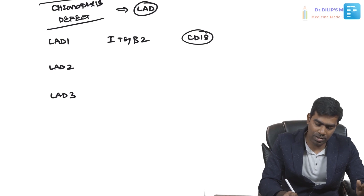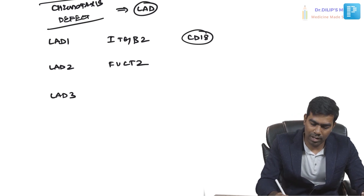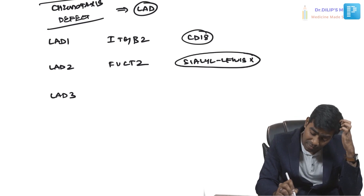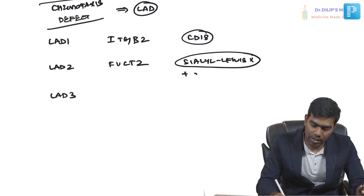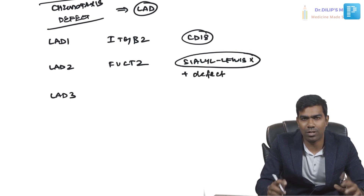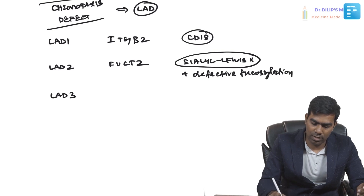LAD type 2, or Leukocyte Adhesion Deficiency type 2, involves a defective gene called FUCT2. The defective component is Sialyl Lewis X. However, it's not only a Sialyl Lewis X defect — it is also due to defective fucosylation, because Sialyl Lewis X is only active after a process called fucosylation.